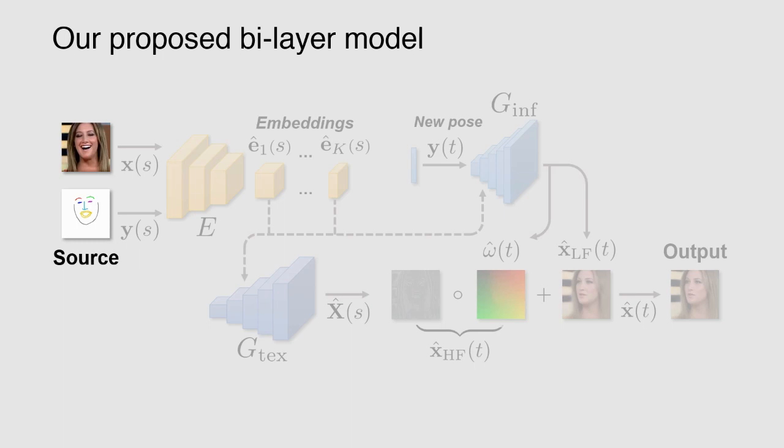Our model utilizes an encoder-decoder architecture, where the standard encoder accepts source image and pose and outputs embedding tensors, which are used to predict person-specific parameters of the decoder.